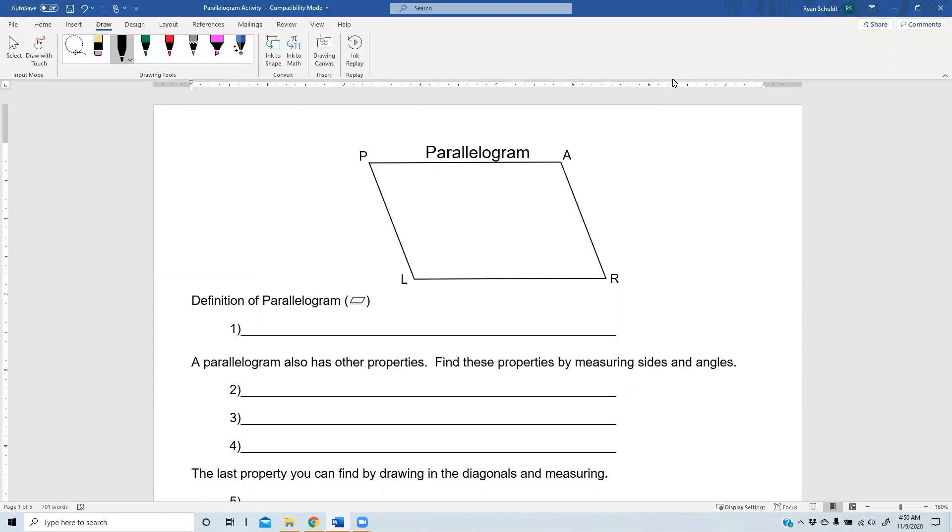So since we are doing a parallelogram activity, the first shape is fitting that we look at a parallelogram. So in looking at this parallelogram, you'll notice that we have two sets of parallel sides. That's because that is the basic definition of a parallelogram. So the opposite sides are parallel.